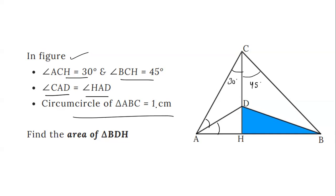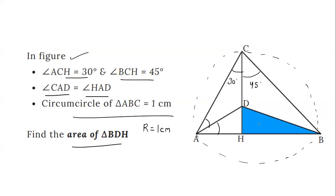The circumcircle of the triangle has a radius of 1 cm. So capital R is the circumcircle radius and it is 1 cm. This is the circumcircle that passes through all the points of the triangle, and the radius is 1 cm. Then we have to find the area of triangle BDH, which is the blue area.